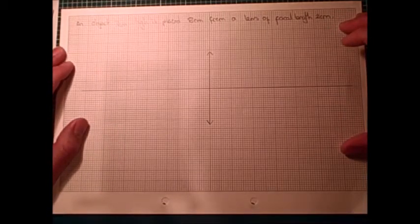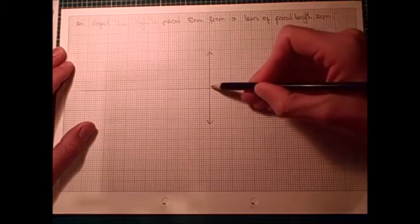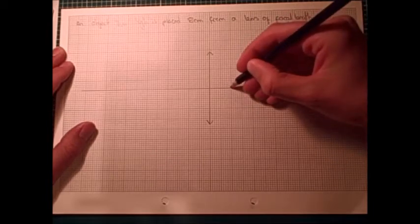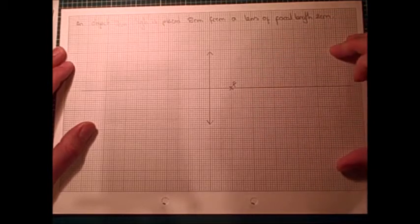Okay, the next thing to do is to mark on the focus. And here it tells us that the focal length is 2cm. So I'm going to count 1, 2cm away. Put a little X. Mark that F for the focus.